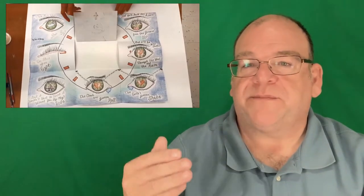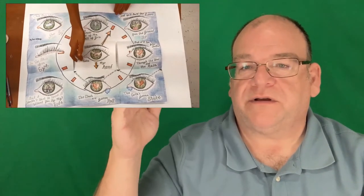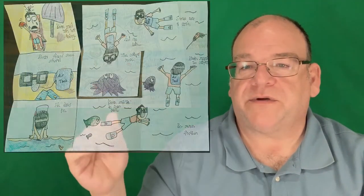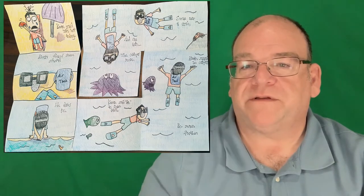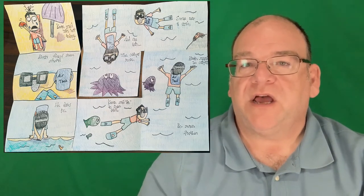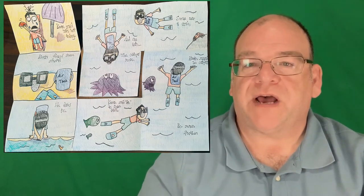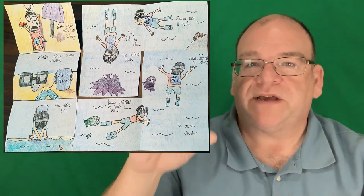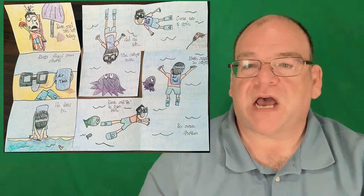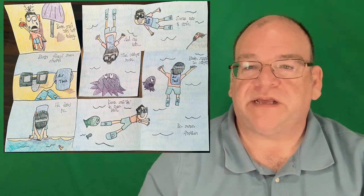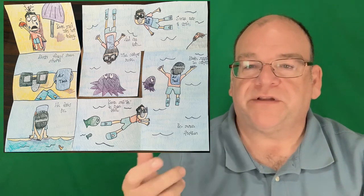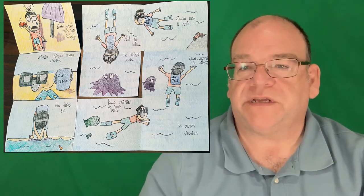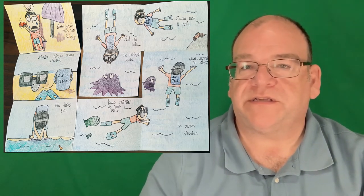In my example it's just a little girl going out for a swim and meeting a dolphin and a squid, but you can obviously break down any story into nine parts and illustrate it. As it's unfolded, it reveals the story or historical event.